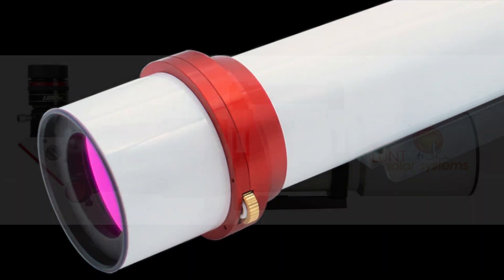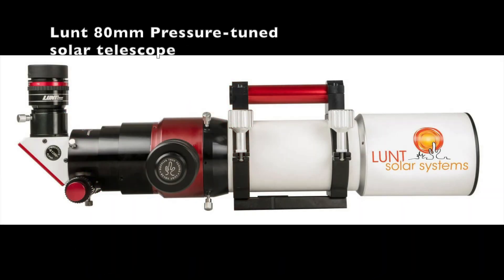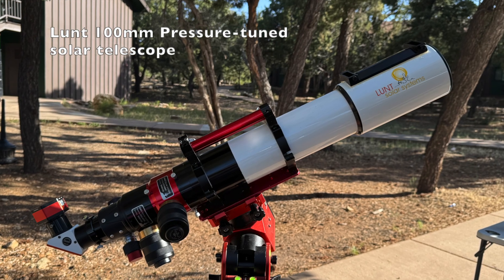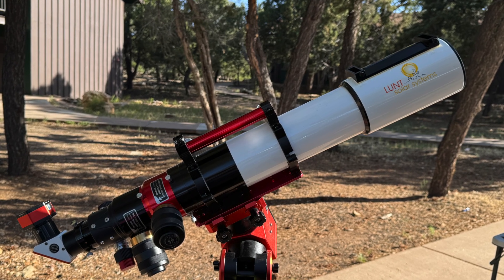Two, pneumatic pressure-tuned etalons. These are used in most Lunt and Coronado telescopes. They provide uniform tuning, they're fast to adjust, they can be modular, easy to double stack, and can produce some spectacular images.